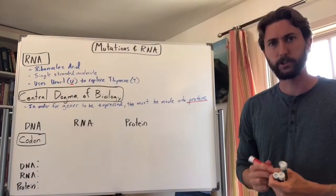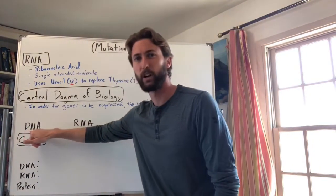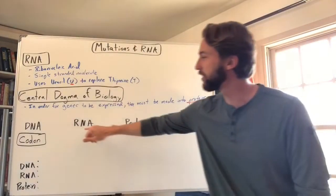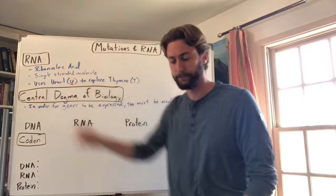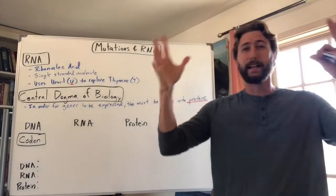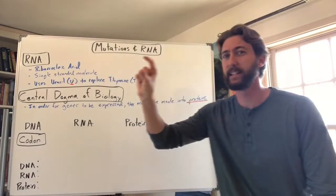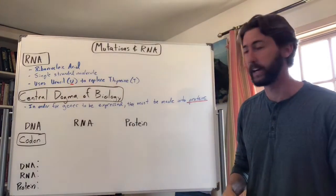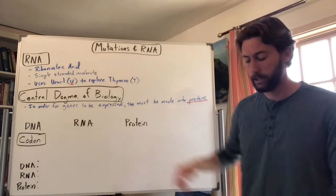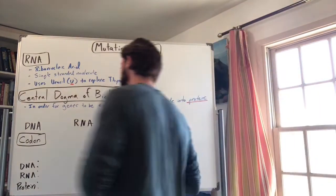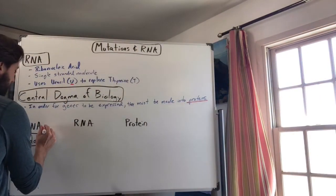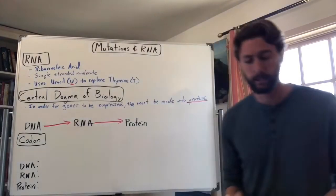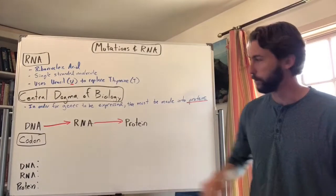So how this happens: you start with the DNA molecule — the instructions. That DNA is then turned into RNA. DNA unzips — remember it's double stranded — it unzips, one strand gets read and turned into a complementary RNA strand. From that RNA, the RNA is then turned into a protein. So DNA codes for RNA, and RNA has the instructions to build the proteins.